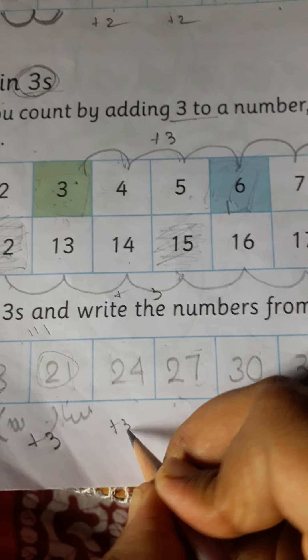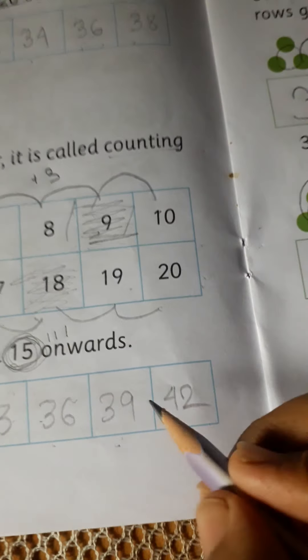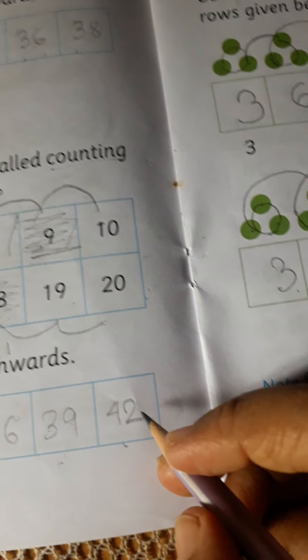Okay, 3s. Then 24, 27, 30, 33, 36, 39, 42.